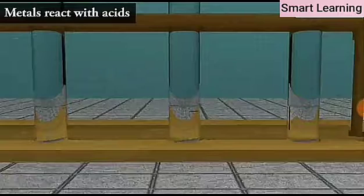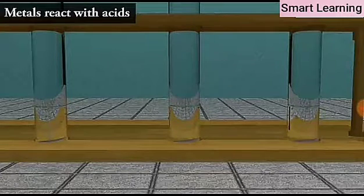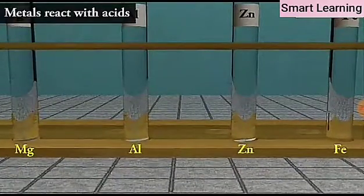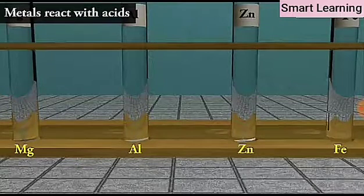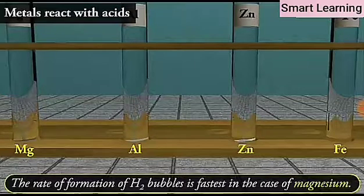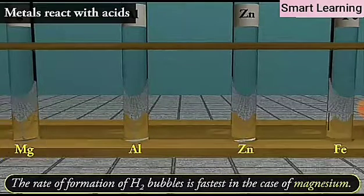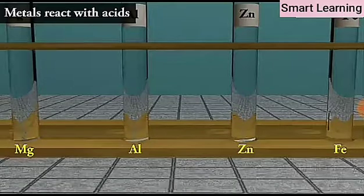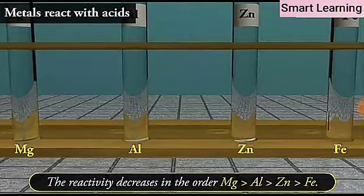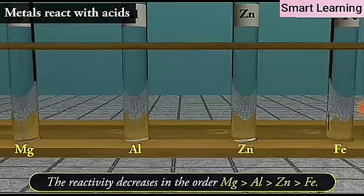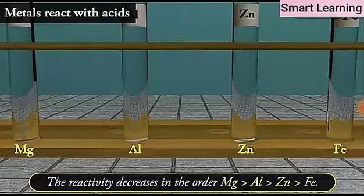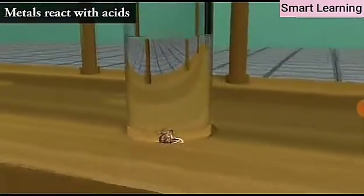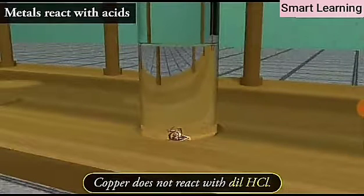Also, the rate of reaction with dilute acid differs from acid to acid. If we allow to react Mg, Al, Zn, Fe with dilute HCl, we find that the rate of formation of H2 bubbles is fastest in the case of magnesium. This reaction is also the most exothermic in this case. The reactivity decreases in the order Mg is more than Al is more than Zn is more than Fe. In case of copper, no bubbles are seen and the temperature also remains unchanged. This shows that copper does not react with dilute HCl.